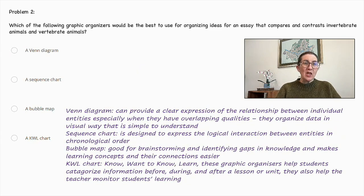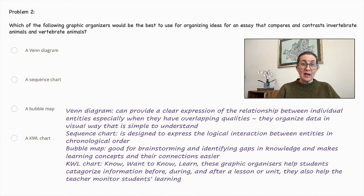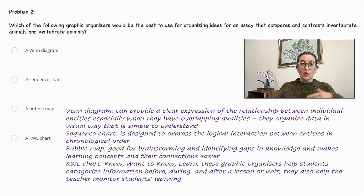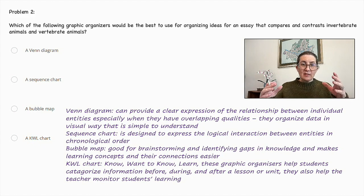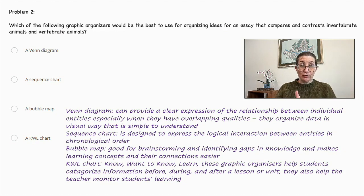Problem number two. Which of the following graphic organizers would be the best to use for organizing ideas for an essay that compares and contrasts invertebrate animals and vertebrate animals? A Venn diagram, a sequence chart, a bubble map, or a KWL chart? KWL stands for what we know, what we want to know, and what we learn. These graphic organizers help students and teachers categorize information before, during, and after a lesson or unit.